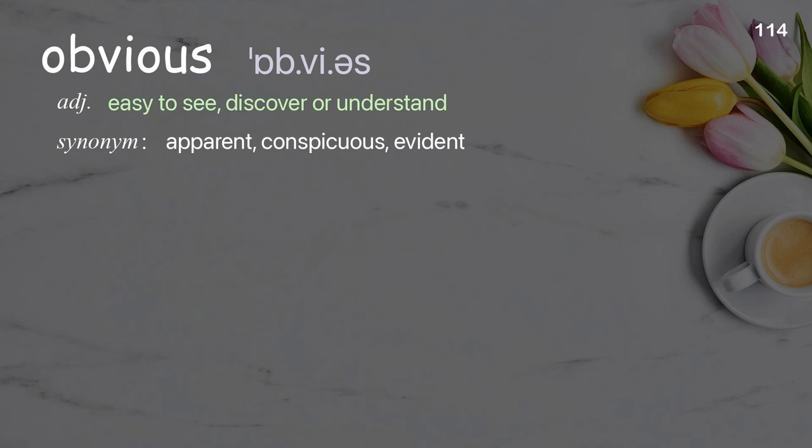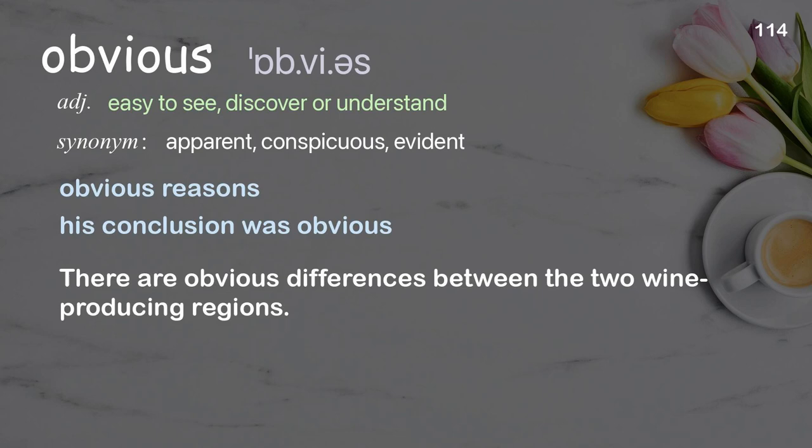Obvious: easy to see, discover, or understand. Examples: obvious reasons, his conclusion was obvious. There are obvious differences between the two wine-producing regions.